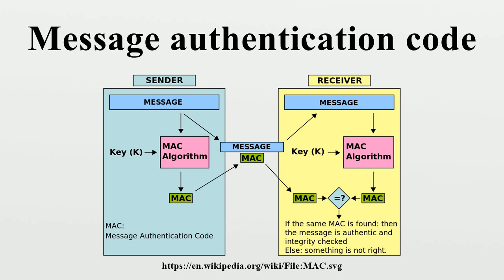Formally, a message authentication code is a triple of efficient algorithms satisfying: G gives the key K on input 1^N, where N is the security parameter. S outputs a tag T given the key K and the input string X. V outputs accepted or rejected on inputs: the key K, the string X, and the tag T. S and V must satisfy PR[K←G, V(K,X,S(K,X)) = accepted] = 1.